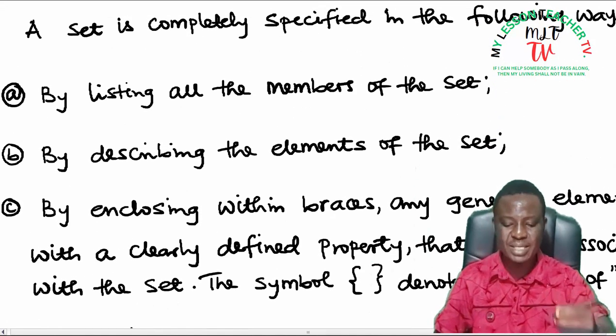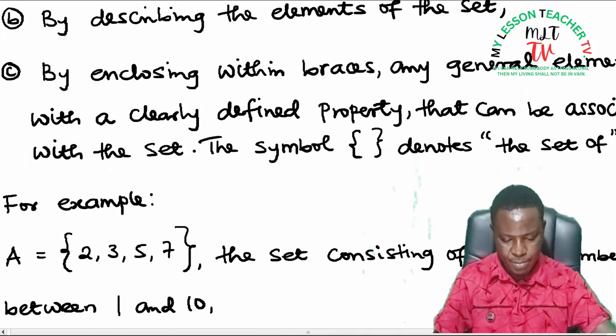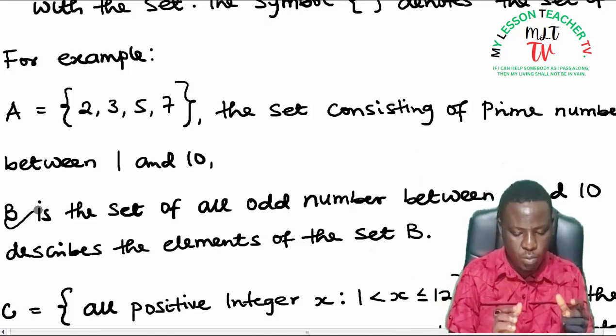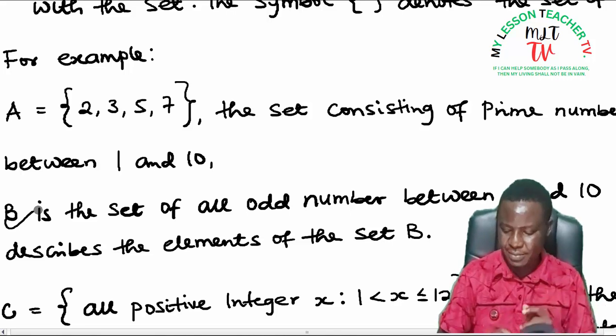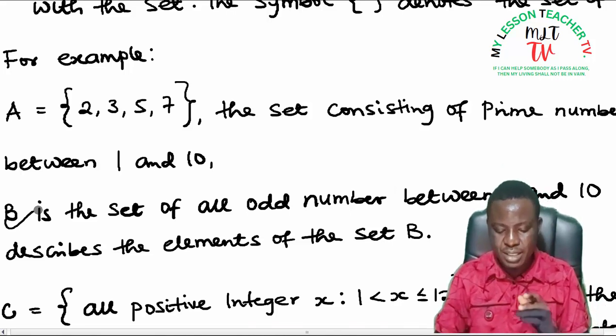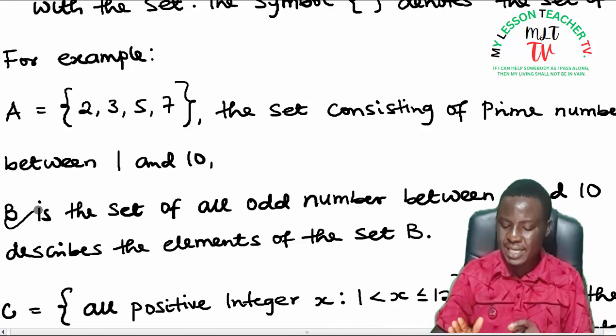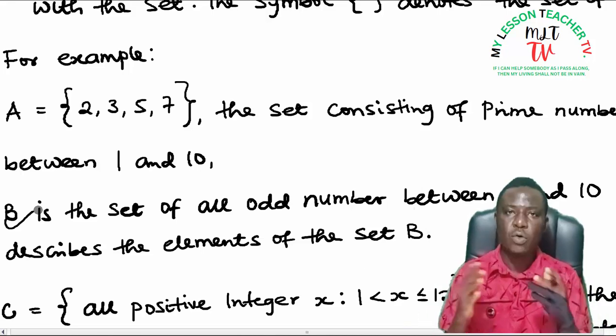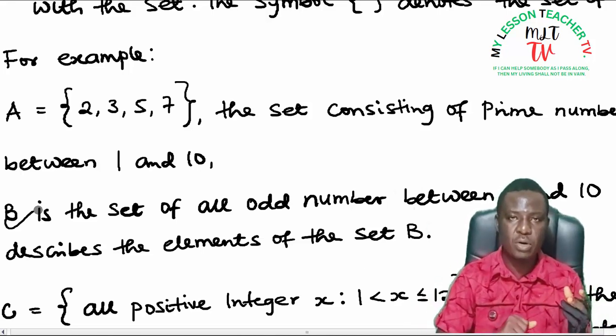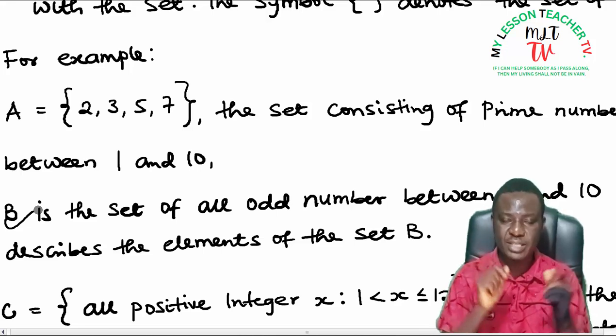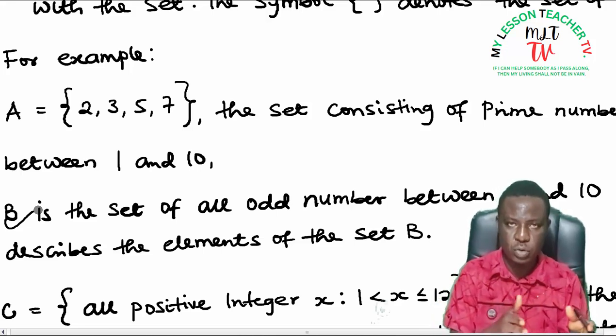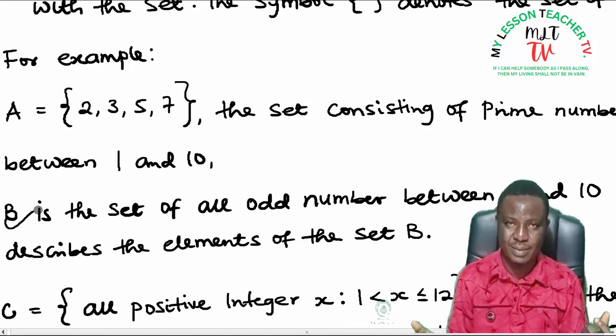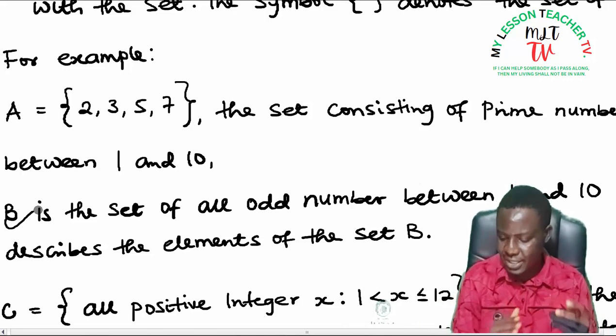B: by describing the elements of the set. By describing the elements of the set, we have an example that B is the set of all odd numbers between 1 and 10. This describes the elements of the set. So by saying, you can just give it as a statement that B is the set of all odd numbers between 1 and 10. Same thing with all members, all those that graduated in 2006 from Air Force Secondary School Makurdi, come out. You have been able to describe that collection of sets as against you calling our names. So this is another way you can represent a set.